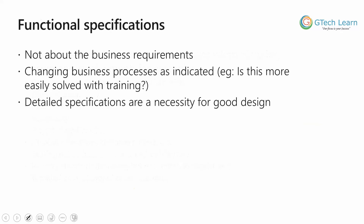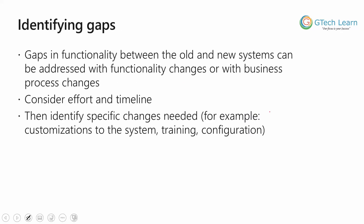When we talk about functional specifications, they're not really about the business requirement — they're about what kind of functionality the client is expecting and what the system provides, and whether it requires any kind of customizations and how frequently we are going to do that. Changing your business processes is often necessary because in most implementation scenarios, the software is the part that will change for the business; the business is never going to change for the software. Detailed specifications are a necessity for a good design, or it could be a disaster if the details are not confirmed and not implemented the way they should be. Mapping functional requirements to the system and identifying the gaps is really an important procedure for the fit gap analysis of the project we are trying to implement.